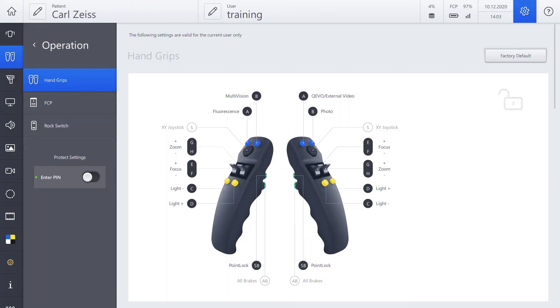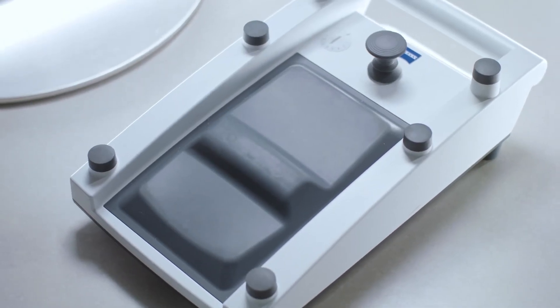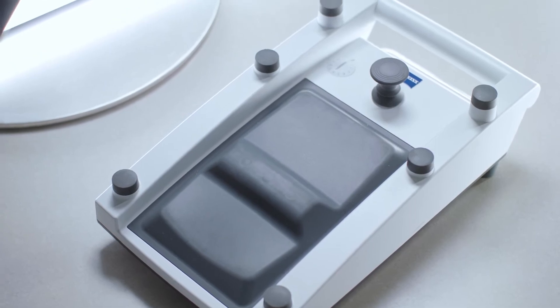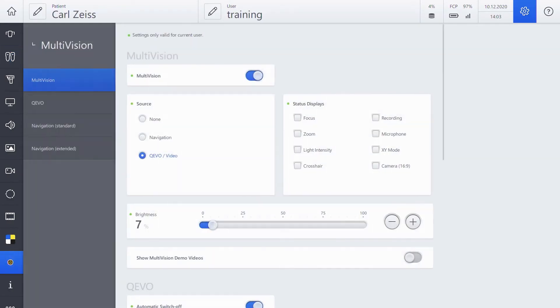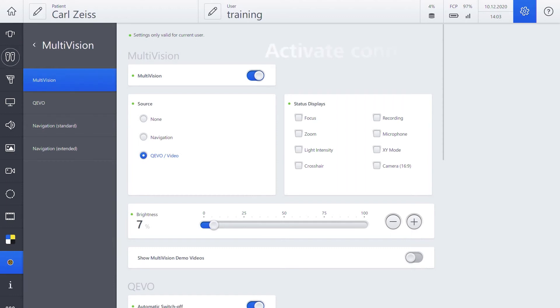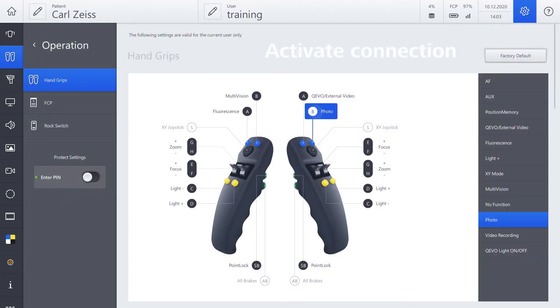By configuring a button on the handgrip or foot control panel of Zeiss Knievo 900, the surgeon can activate the display of Zeiss Convivo images on Zeiss Knievo 900. Press the handgrip icon, choose a button and select Kavo External Video from the list.